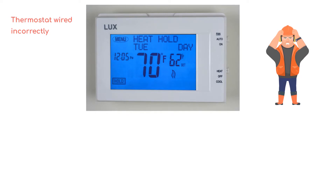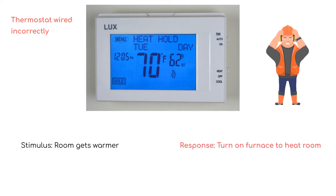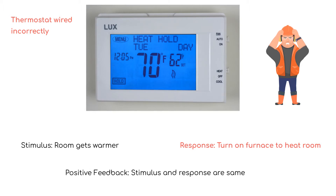Now let's say that the thermostat is wired the wrong way. When the temperature in the room rises above 70 degrees, instead of turning on the air conditioner, the furnace turns on and raises the room temperature. Can you see that the stimulus and response are now the same? The stimulus is the room getting warmer, and the response is to turn on the furnace to make the room even warmer. Since the stimulus and response are the same, we call this positive feedback.